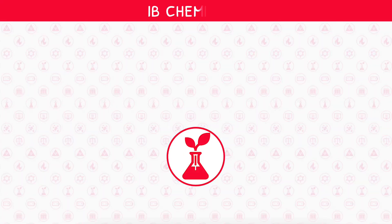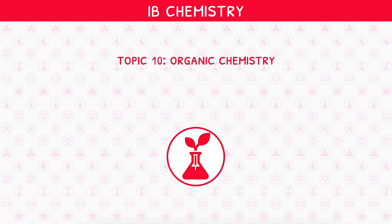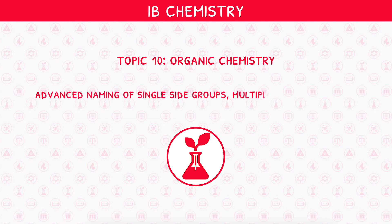Welcome back to our IB Chemistry video series. This is the second video in IB Chemistry Topic 10, Organic Chemistry, where we will be looking at advanced naming of single side groups, multiple side groups, side chains and isomers. In the previous video of this series, we covered the naming of the basic members of all nine homologous series. This video will introduce more complex naming rules, starting with the presence of side groups.